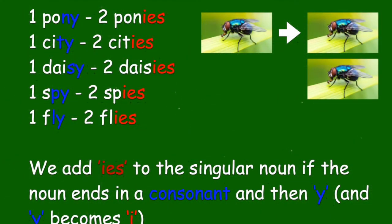One pony, two ponies; one city, two cities; one daisy, two daisies; one spy, two spies; one fly, two flies. We add IES to the singular noun if the noun ends in a consonant and then Y, and Y becomes I.